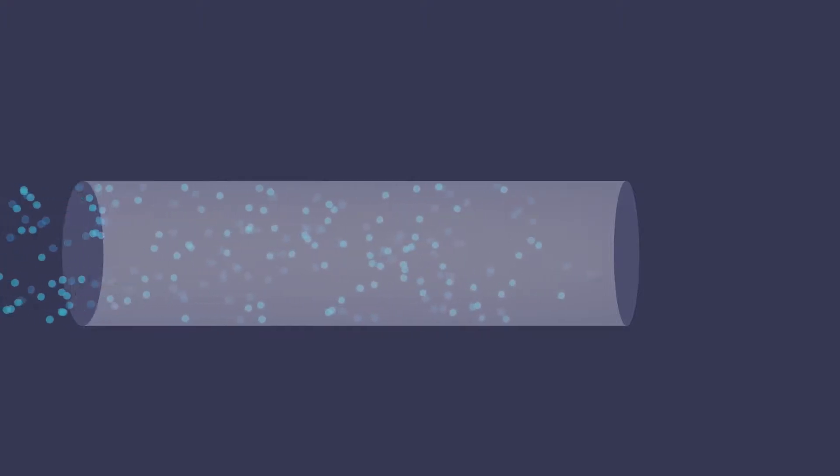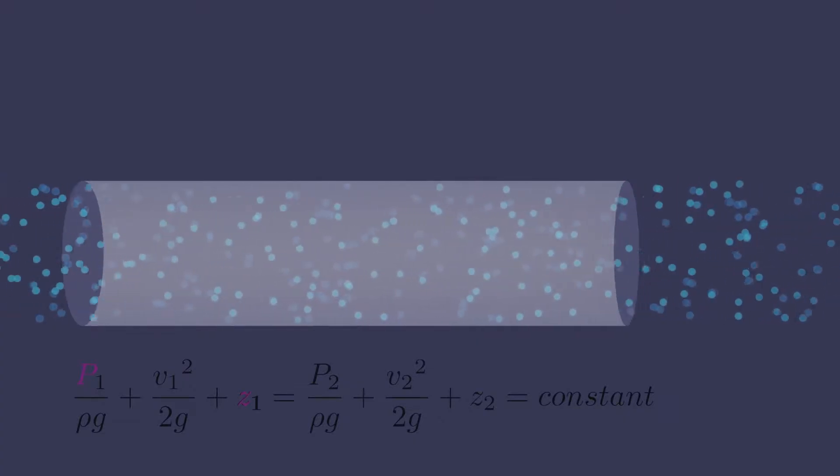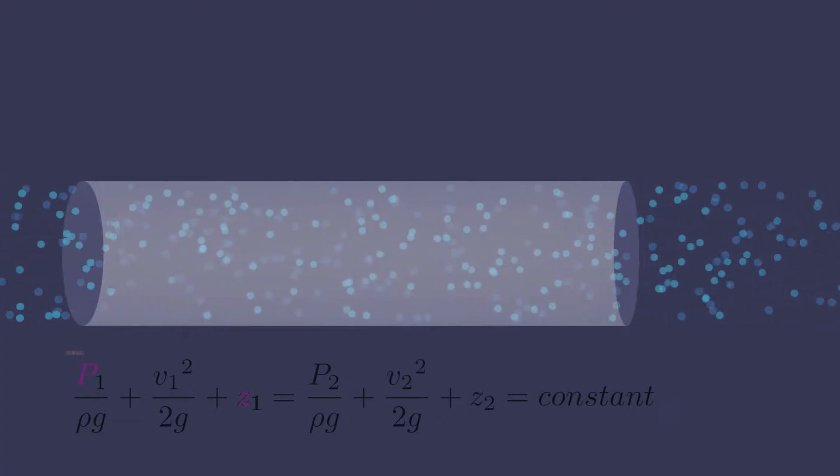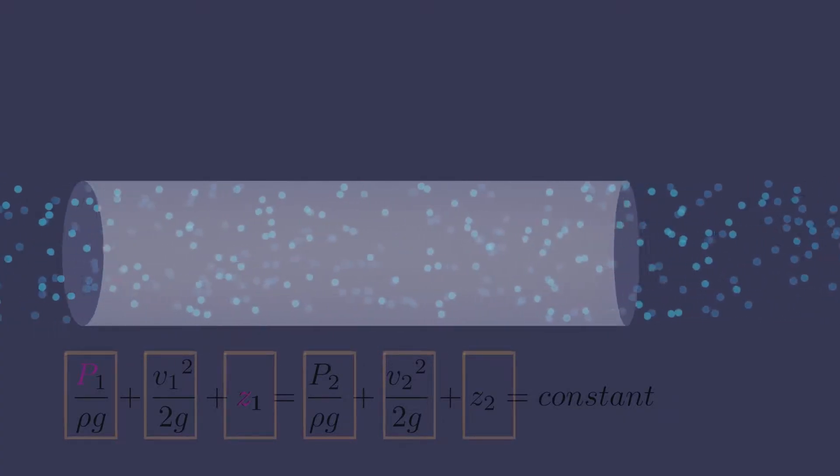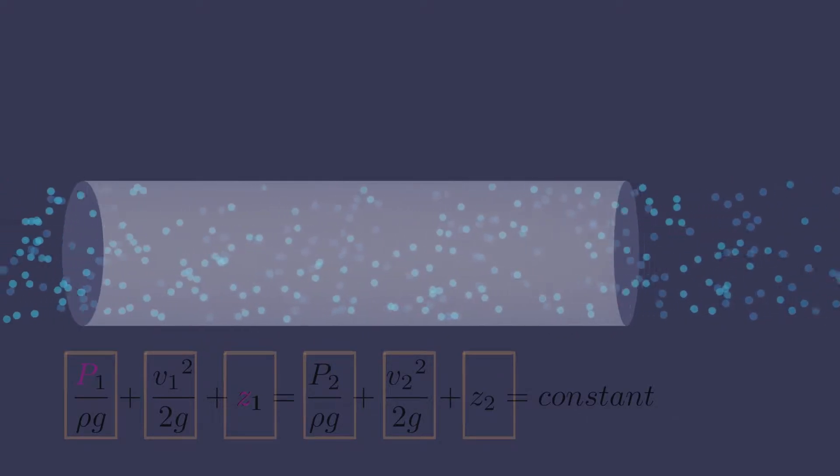To understand the energy and hydraulic grade line, you need Bernoulli's equation expressed in terms of height. Each term in this equation has a dimension of length, which is used for visualizing the energy grade lines.